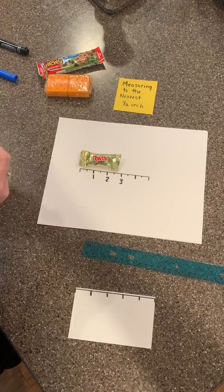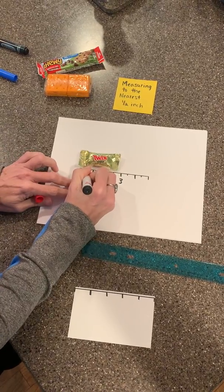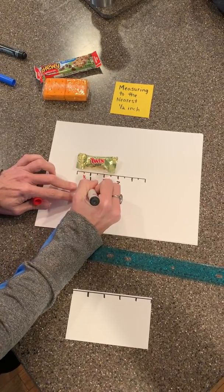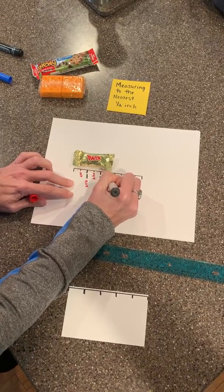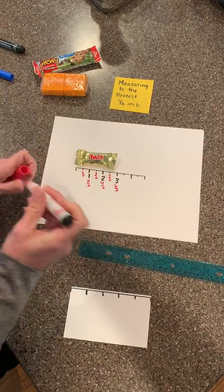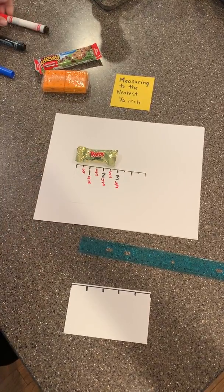But then I can also see that this would be one half. This would be two halves, three halves, four halves, five halves, and six halves. And you've done that earlier in the year as well.